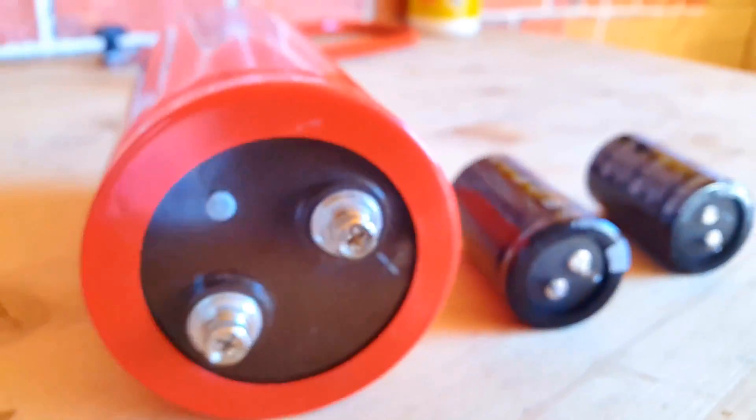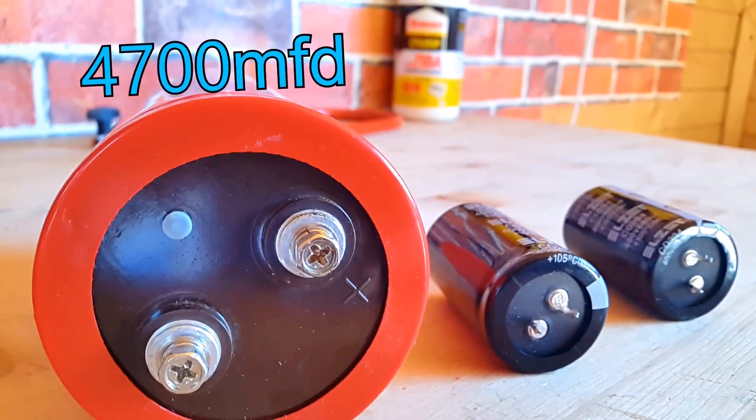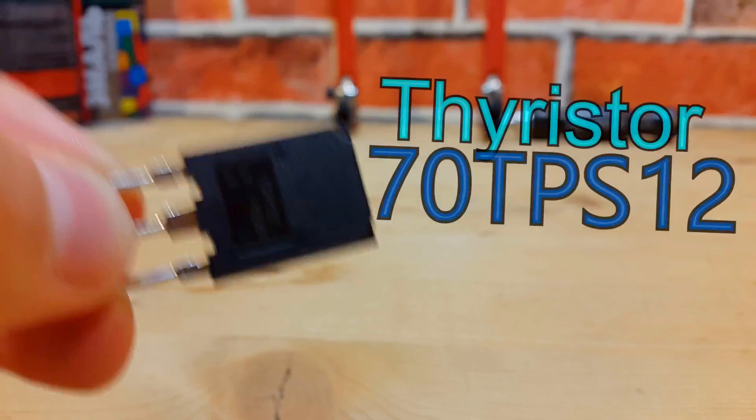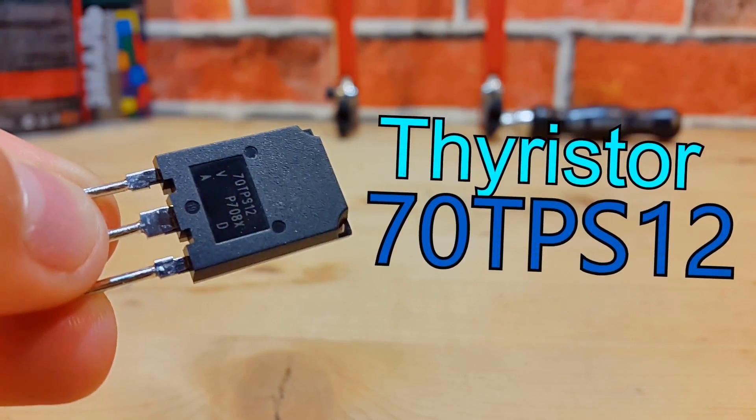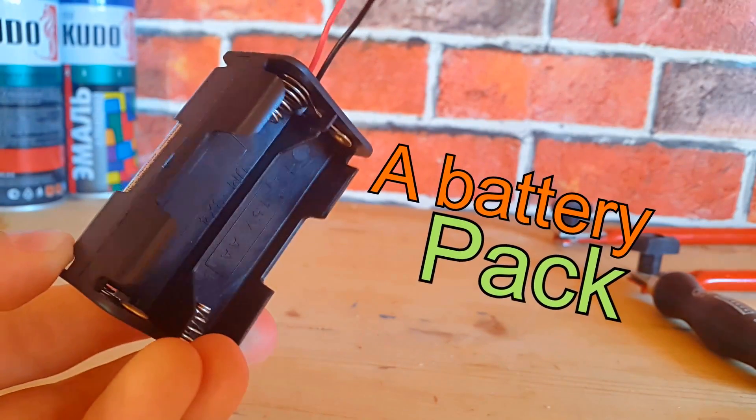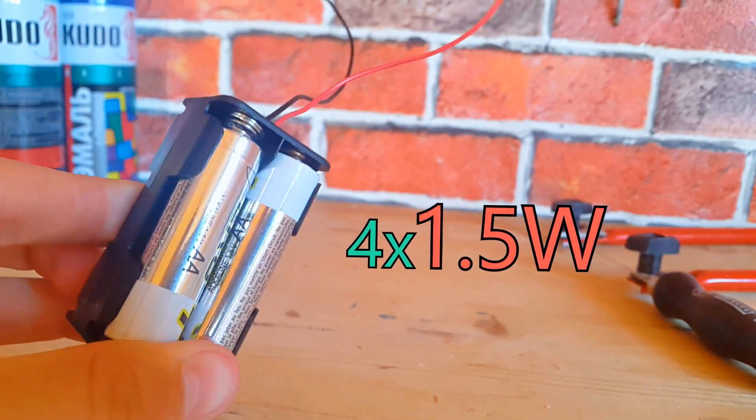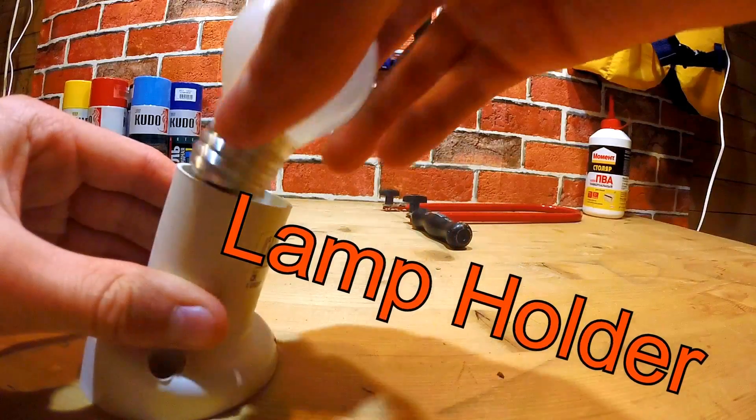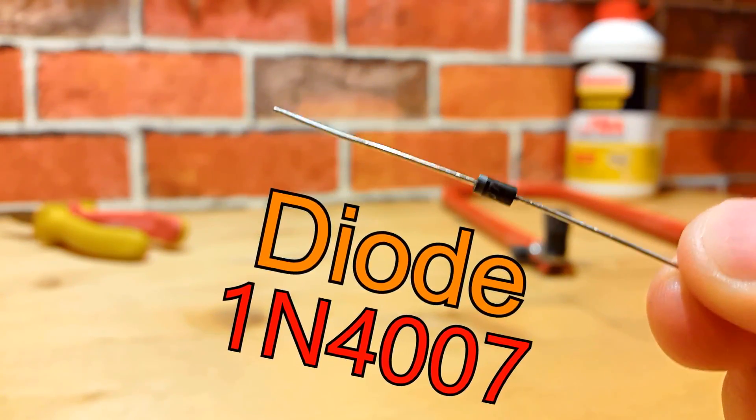The more the better. A button to pull the trigger, a thyristor for the large voltage switching, four batteries as a power source, a bulb to restrain the voltage, and a diode to rectify mains voltage.